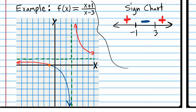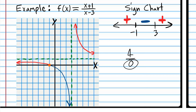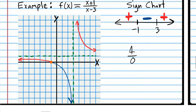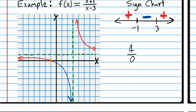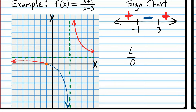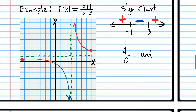Now let's try plugging in three to the expression. If you plug in three you get four over zero — zero is in the denominator. On the graph we have a vertical asymptote in that situation. Four over zero is undefined, so be aware of that.